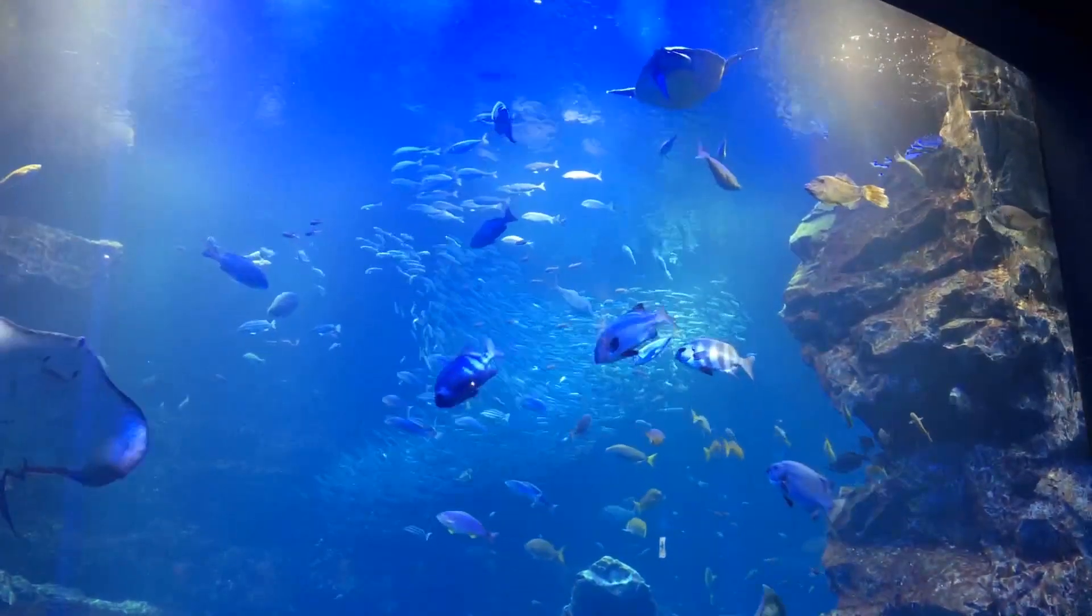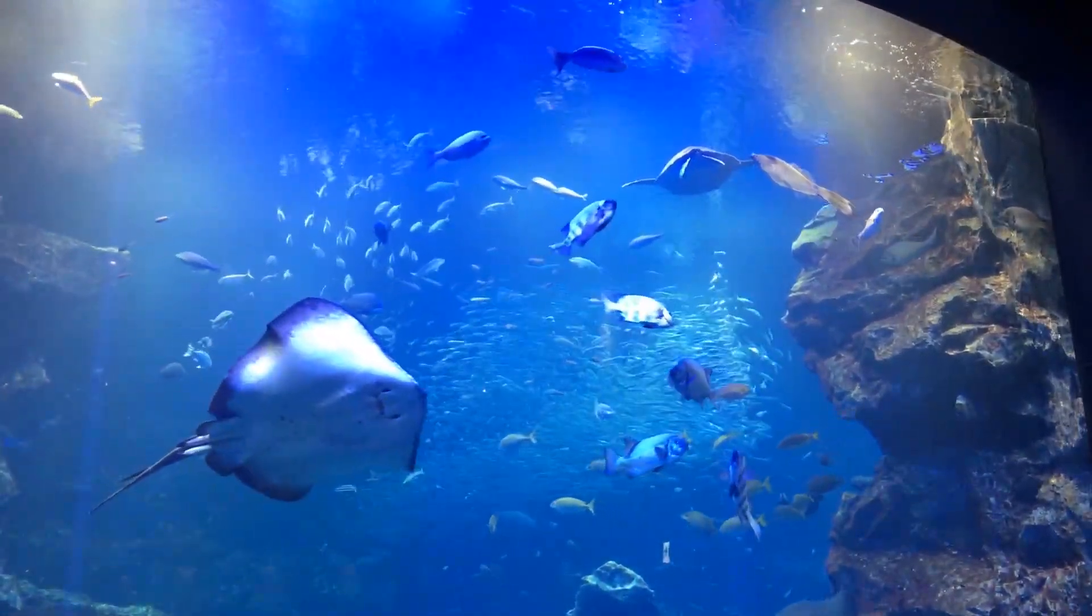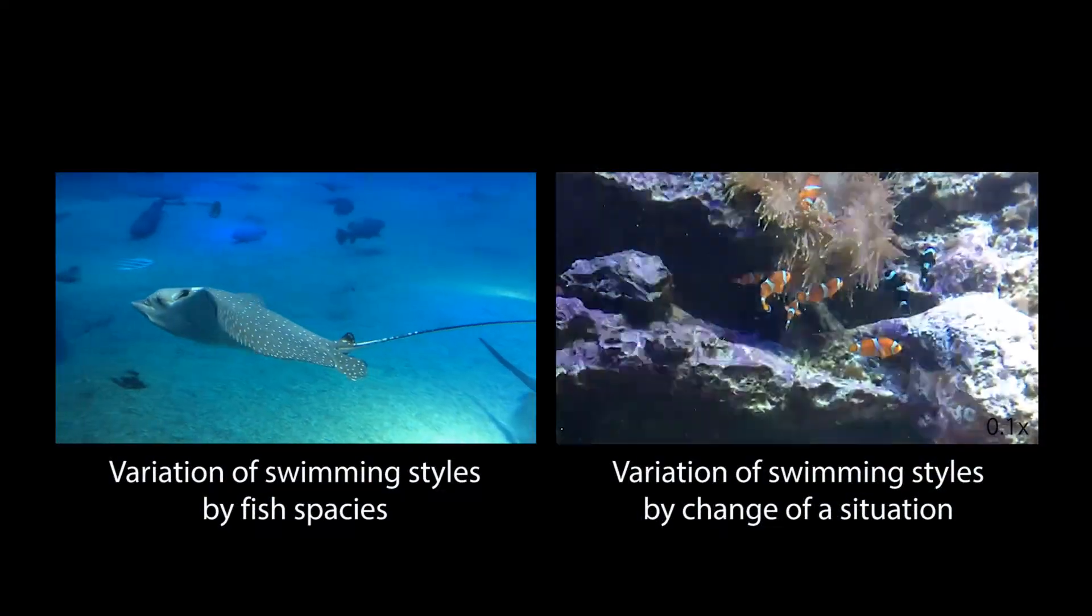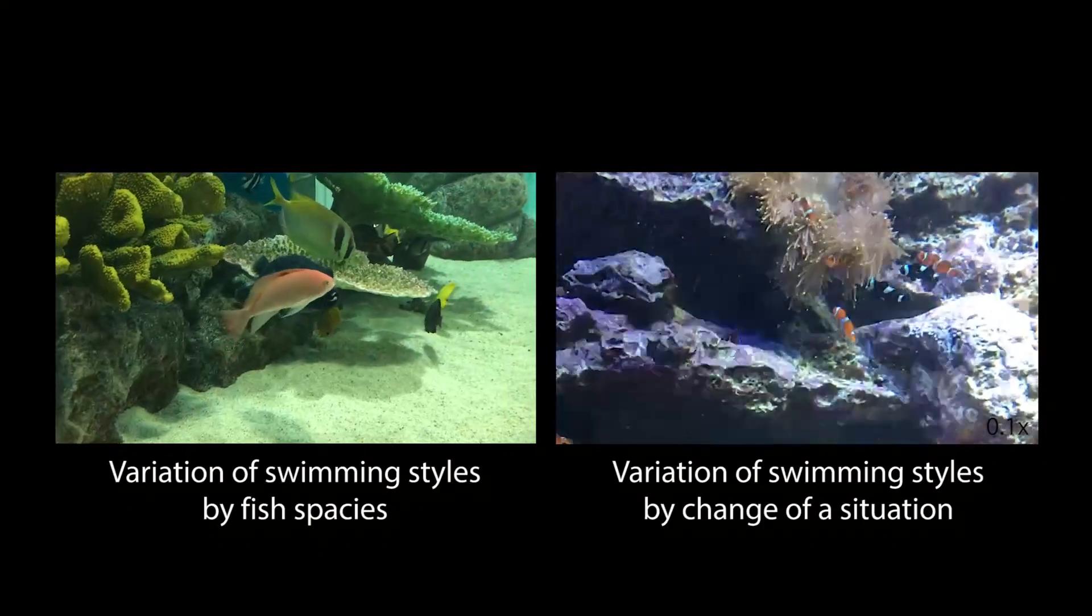Over 28,000 types of fish live in the water, and their swimming styles are very diverse. The swimming styles of fish vary depending on the type of the fish and the situation the fish finds itself in.